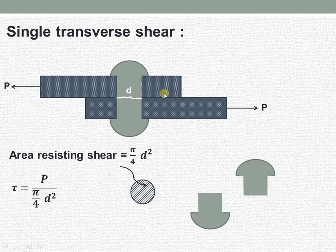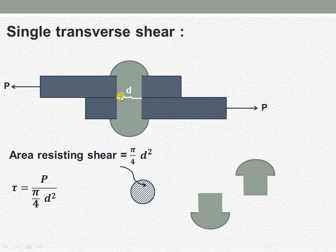As shown here, we have two plates — plate 1 and plate 2 — both connected by a rivet having a diameter of D. The rivet is subjected to a tangential force P. If this force exceeds a certain strength of the rivet, failure will take place at the junction as indicated.